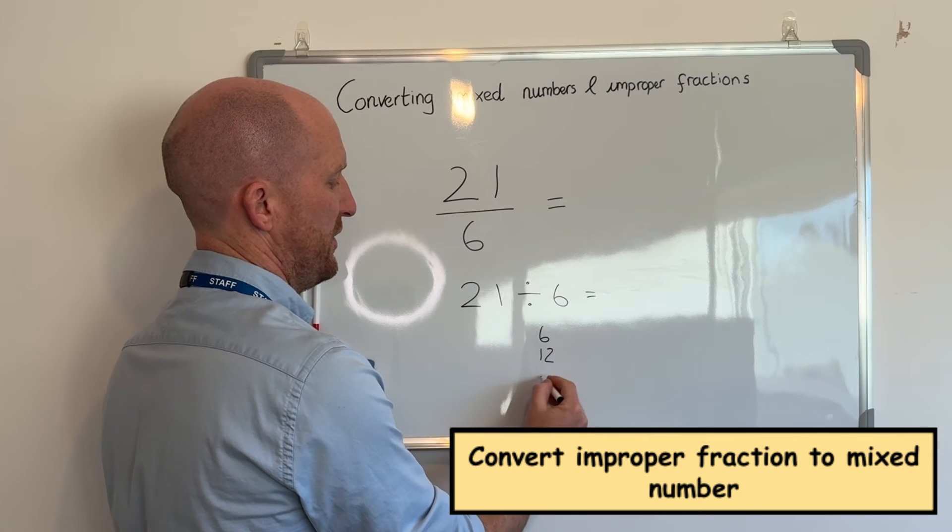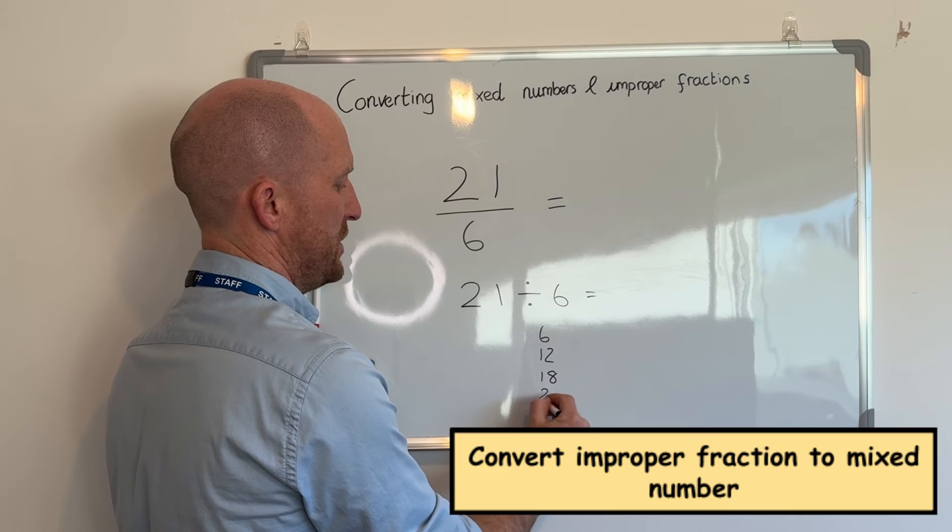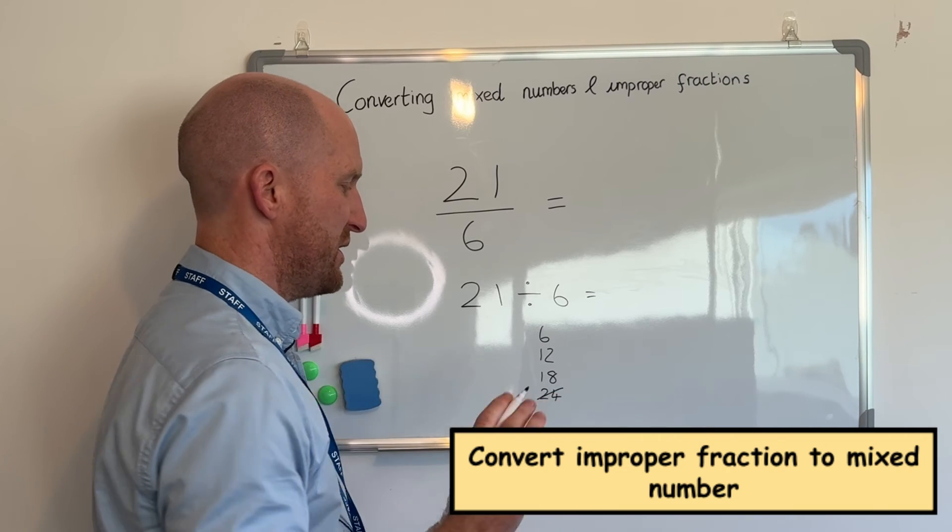So six, twelve, eighteen, twenty-four is too many. So it's not that. So there is one, two, three.